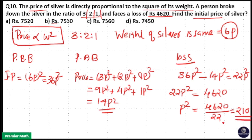So 210 is P square, that means initial price is equal to 36 into 210. 36 into 200 is 7200, 36 into 10 is 360. So 7200 plus 360 is equal to 7560.